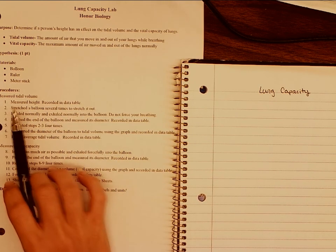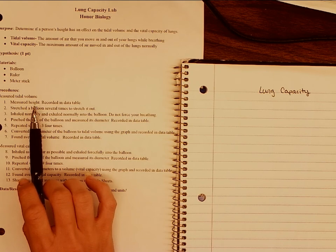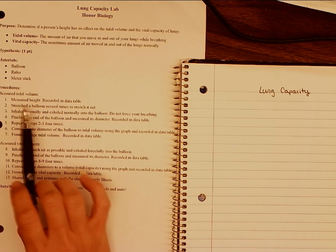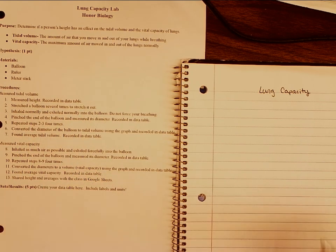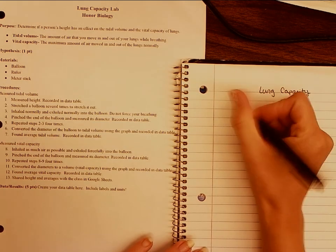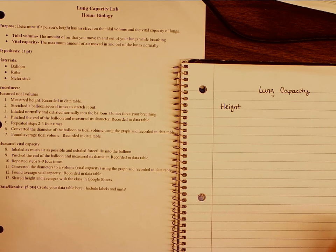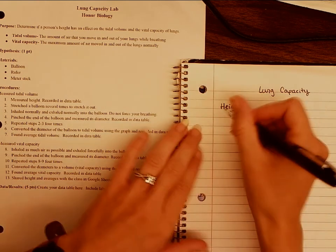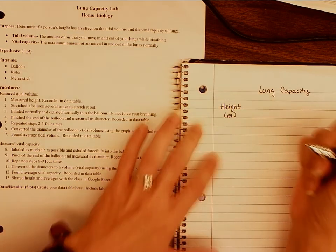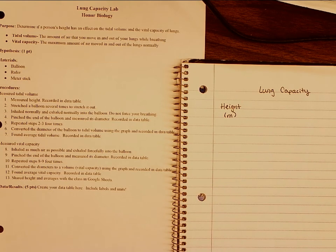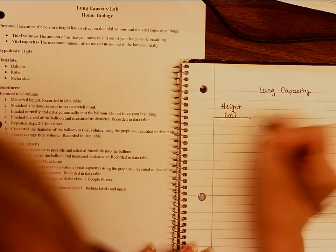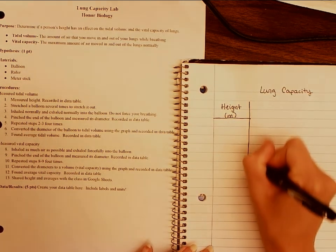So if we're looking here for our first one, looking at tidal volume, step number one, measured height recorded in the data table. First thing we're going to have in our data table is height. Now a really great unit for height is going to be meters. We're going to be using the metric system, so that means there's no inches, no feet. We're going to keep with our standard SI units. So meter, liter, and gram. So we're going to start with our height.